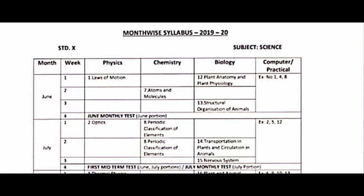Biology covers lessons 12, 13, 14, and 15 — that is 4 lessons. We are going to talk about botany and zoology: lessons 12, 13, 14, and 15 — also 4 lessons.